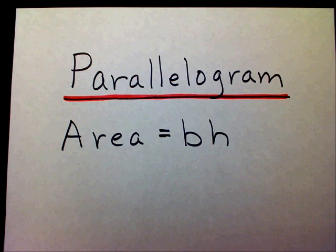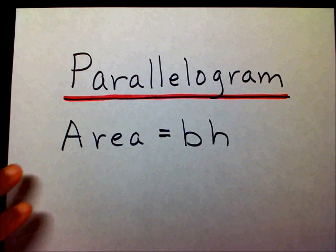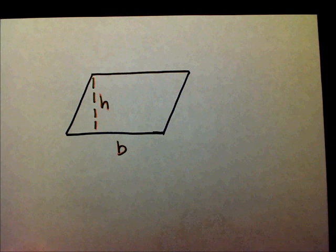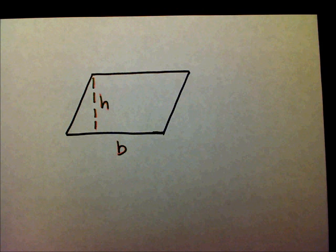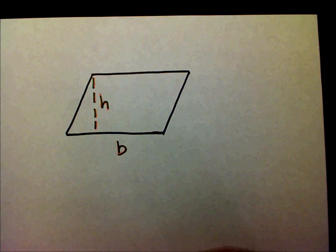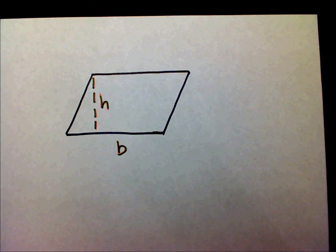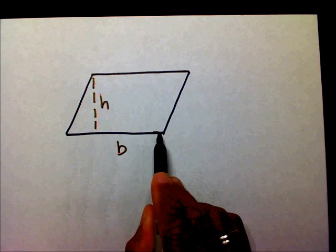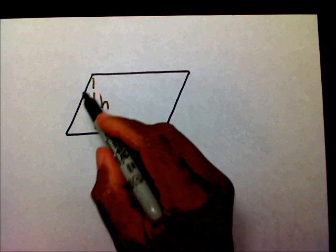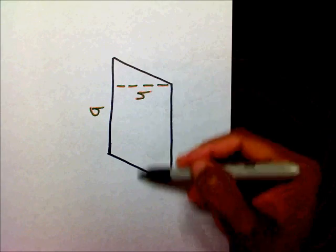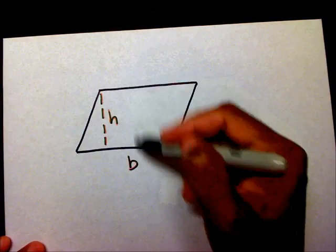Today we're going to find the area of a parallelogram. A parallelogram has two opposite sides that are parallel to each other. These two sides are parallel and also these two sides are parallel. These two sides are parallel and these two sides are parallel.